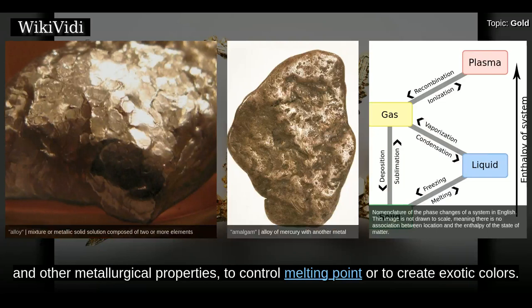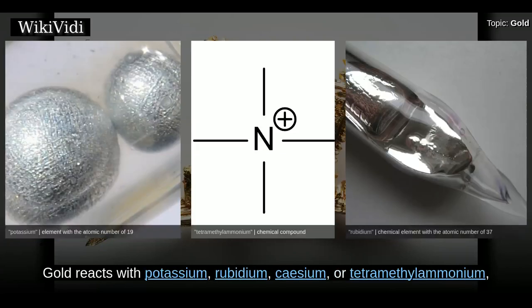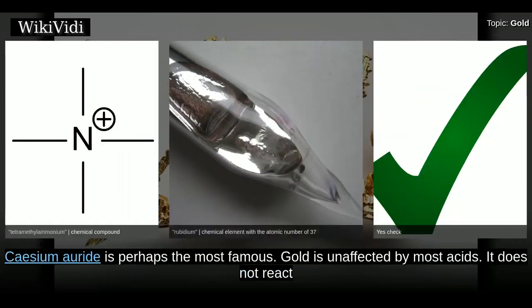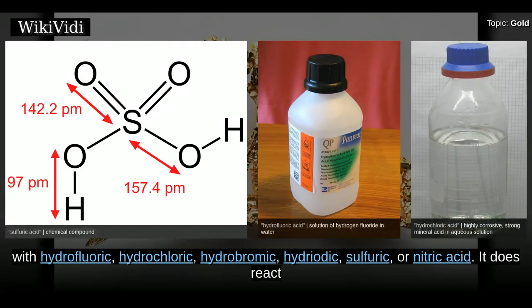These alloys can be produced to modify the hardness and other metallurgical properties, to control melting point, or to create exotic colors. Gold reacts with potassium, rubidium, caesium, or tetramethylammonium to form the respective auride salts containing the Au− ion. Caesium auride is perhaps the most famous. Gold is unaffected by most acids. It does not react with hydrofluoric, hydrochloric, hydrobromic, hydroiodic, sulfuric, or nitric acid.